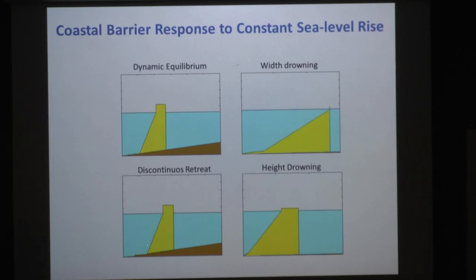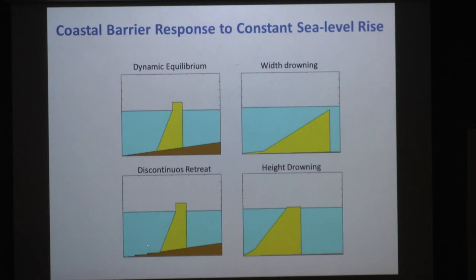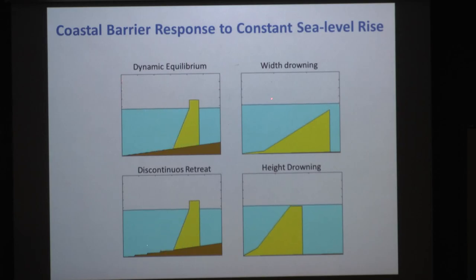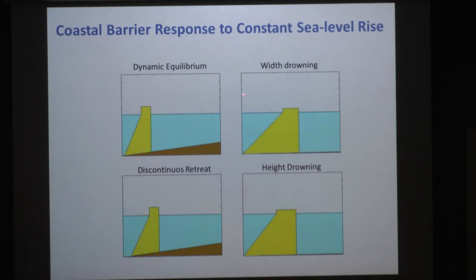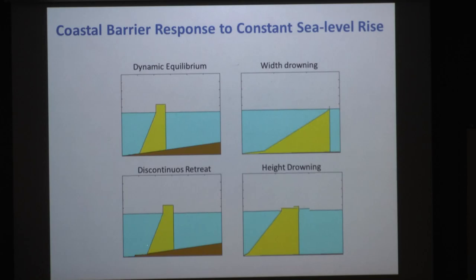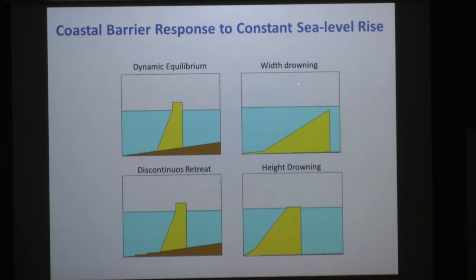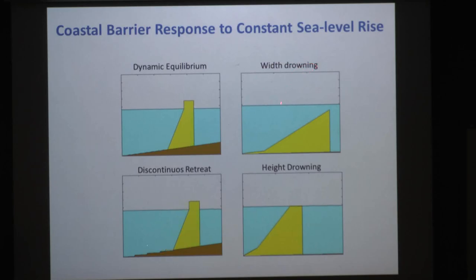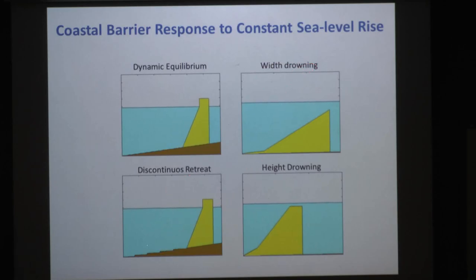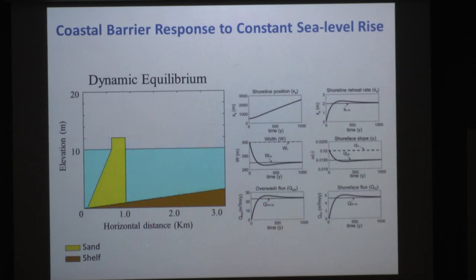This simple model can produce four different responses: dynamic equilibrium (also called rollover in the literature), drowning, discontinuous retreat, and high drowning.